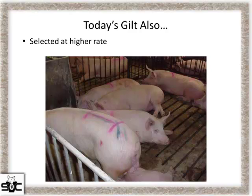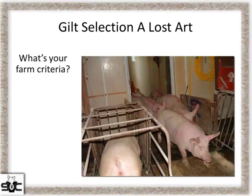In general, we probably select gilts at a higher rate into sow farms, and the art of gilt selection has probably been lost in a lot of herds. I'd ask the group: what is your criteria for entering gilts? Is it just the ones that can walk that come in, or do we have some method of evaluating feet, legs, and structure as we're selecting gilts? That's an important part of reducing lameness and future mortality in the sow farm.